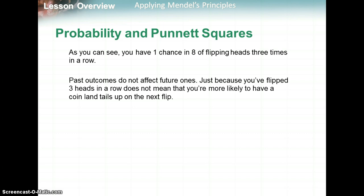Past outcomes do not affect future ones. For example, just because you had a boy or girl the first time doesn't mean that's going to affect whether you have a boy or girl the second time. My husband's boss has five boys — that doesn't fit the expected probability, but it's a possibility. Just because you flipped three heads in a row doesn't mean you're more likely to get tails next time, because each flip is independent.